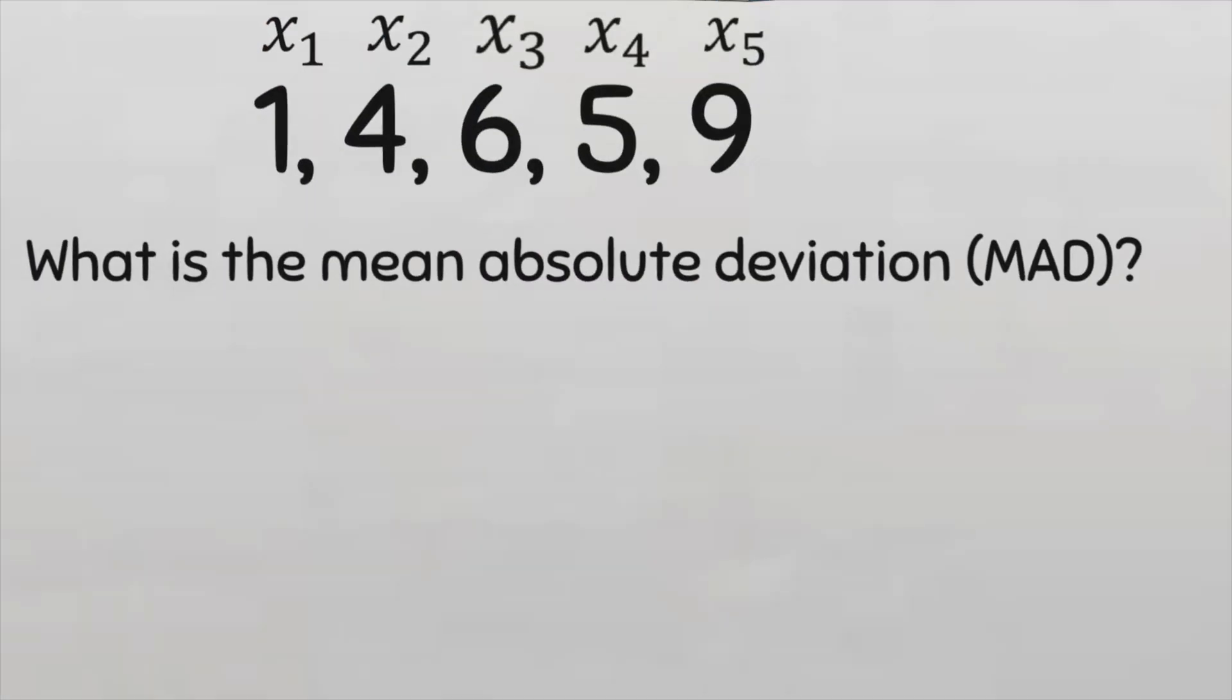You can see from this data that there were only 5 children because there are 5 ages, or 5 data points. So our number of data values n is equal to 5.